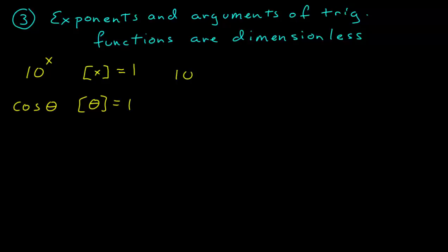What can this tell us? Say we have 10 to the negative t over tau, where t is a time. Well, the dimension of that ratio, t over tau, must be equal to 1, or it has to be dimensionless.